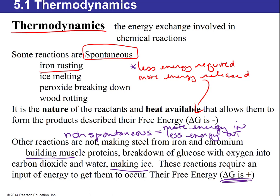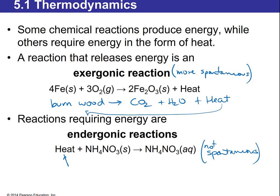You can also categorize reactions as exergonic or endergonic. 'Gonic' refers to energy. If a reaction is spontaneous, energy is released — that is exergonic, and energy or heat is a product on the right side of the reaction. The top example shows rusting: iron combining with oxygen to make iron oxide, which is rust.